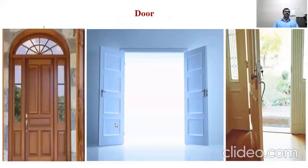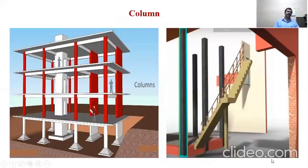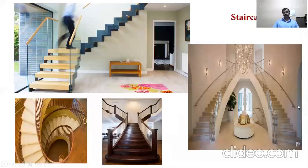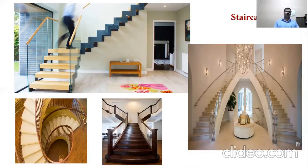A door is essential to admit light and for access purposes — to assess the bedroom, kitchen, etc. You require doors. Columns are provided to receive the first floor load or to support the first floor. Staircase is essential. Types of staircases include dog-legged staircase and helical staircase. Dog-legged staircases are commonly used in large-scale buildings.